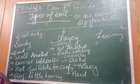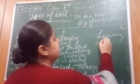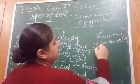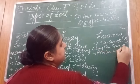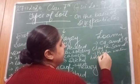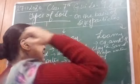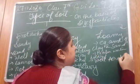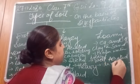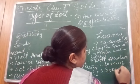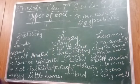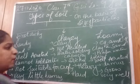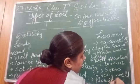In case of loamy soil, it contains an equal amount of sand and clay. Because equal amounts of clay and sand are present, it has proper water-holding capacity and is also well aerated. Humus is also present, which makes it very fertile — plants grow very well in this type of soil. It can also be plowed easily.